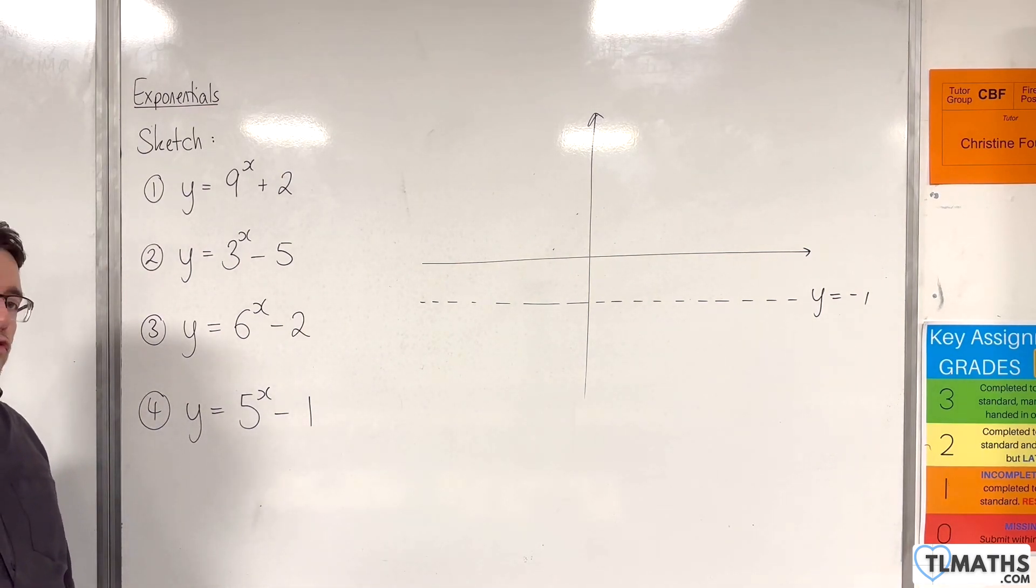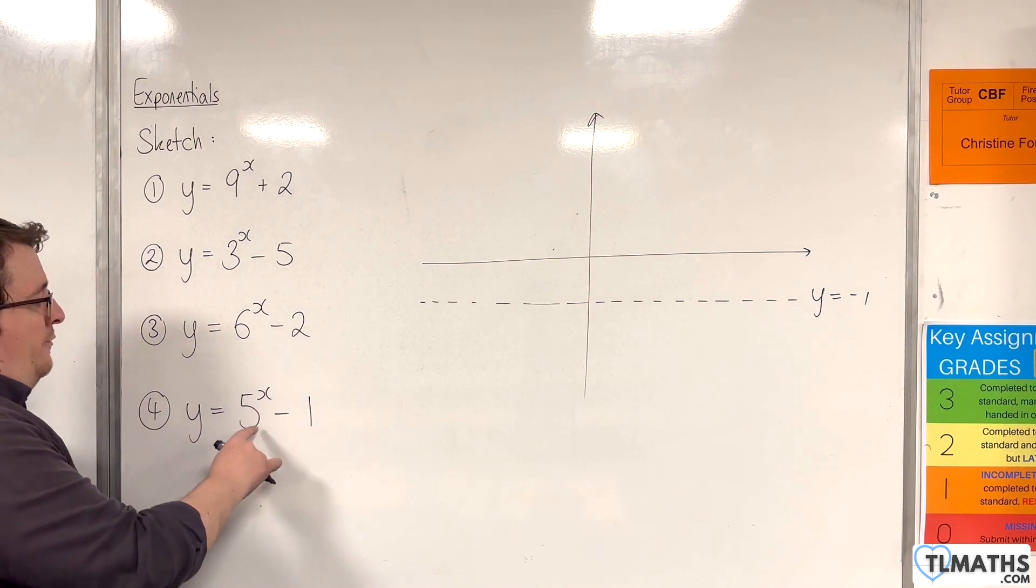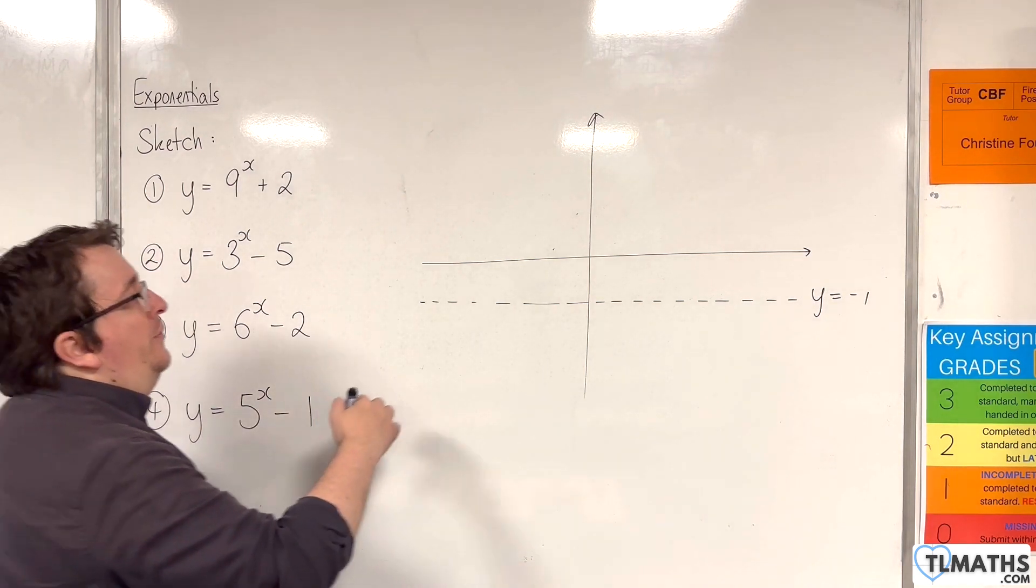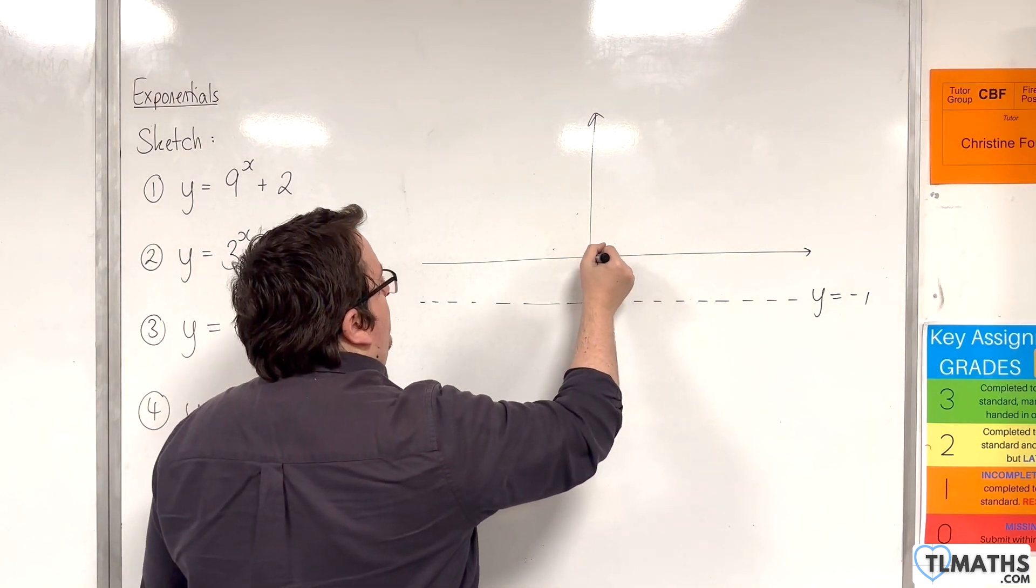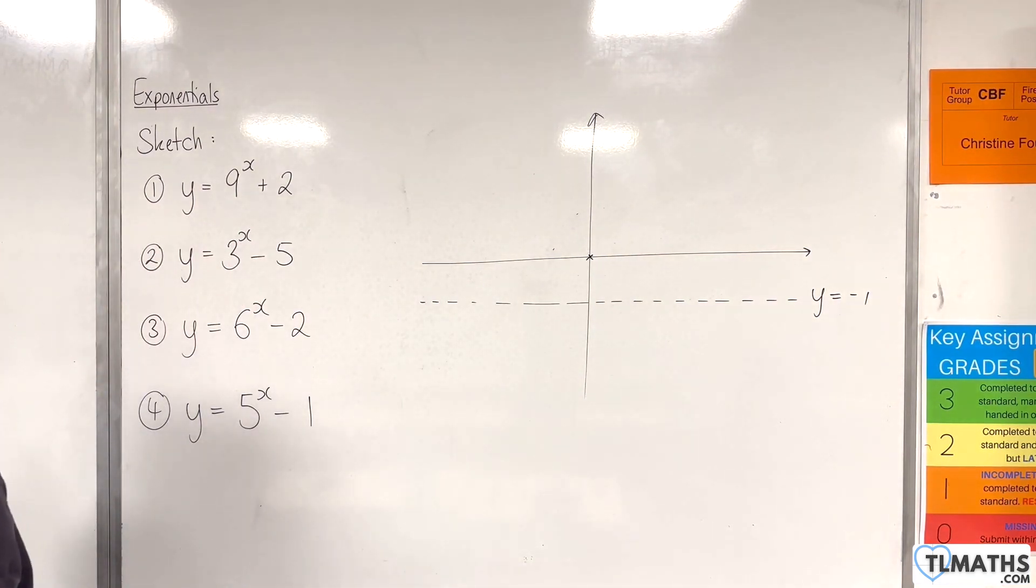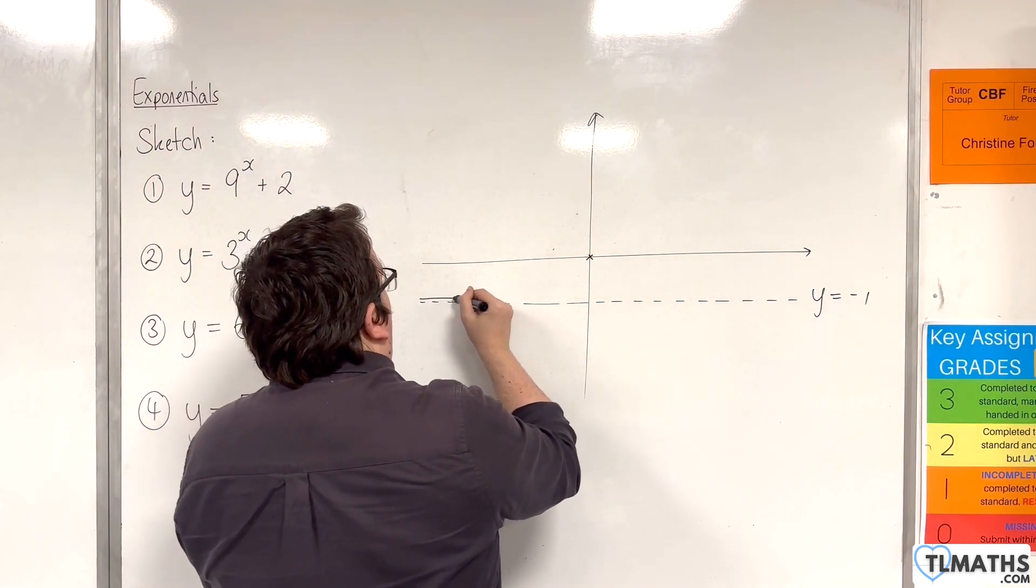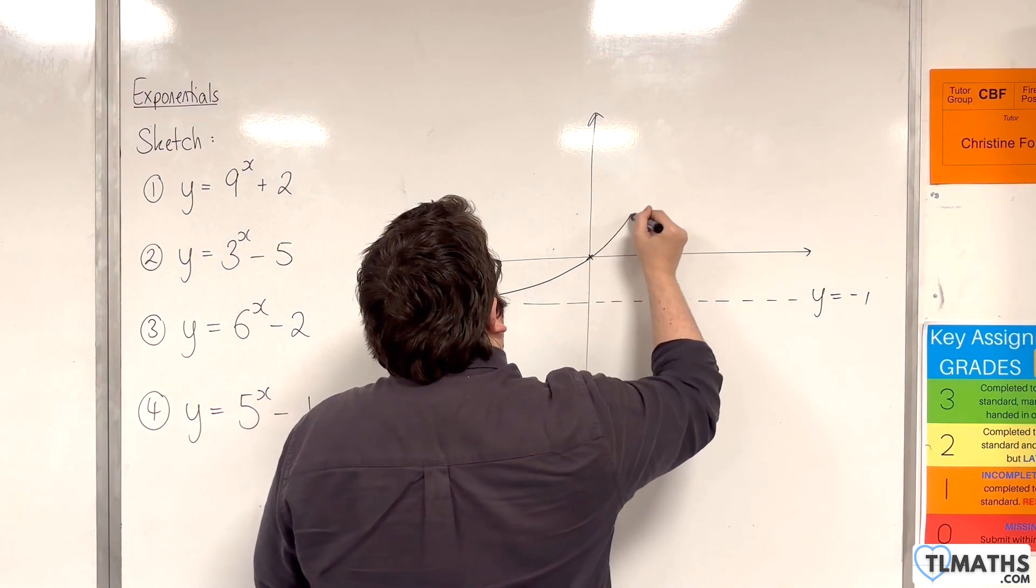Now before I draw on the curve, I am going to work out where it crosses the y-axis first. Now that's when x is 0. So we'll have 5 to the 0 take away 1, which is 1 take away 1, which is 0. So that means that the curve crosses through the origin. So our curve will look like this.